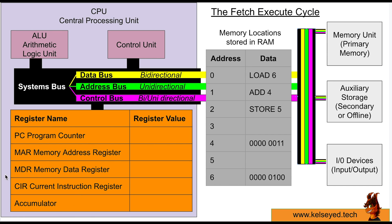Down here are the registers — temporary memory locations used while the processor is running and performing its processes in the Fetch Execute Cycle. Then we have the system bus, which consists of three different buses that together reference memory addresses and locations, and communicate data between main memory, secondary memory devices such as a hard drive or a memory stick, and IO devices. Instructions could include performing a calculation in memory, reading and writing data from storage, or sending signals to IO devices.